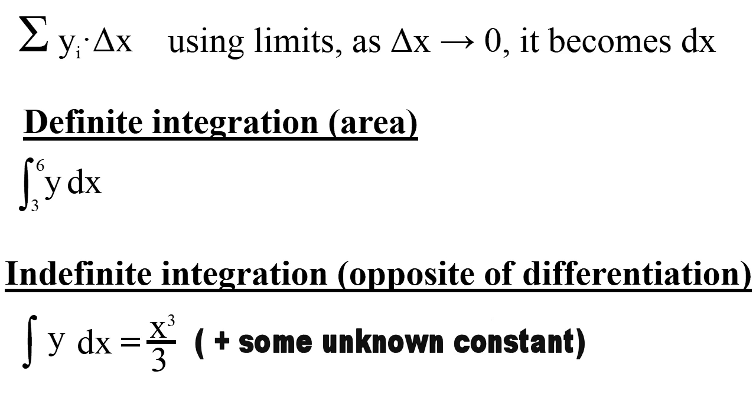This type of integration is called definite integration, which gives us the area. If the upper and lower bounds were omitted, then this would be indefinite integration, which some people refer to as the antiderivative, because you are doing the opposite of differentiation.